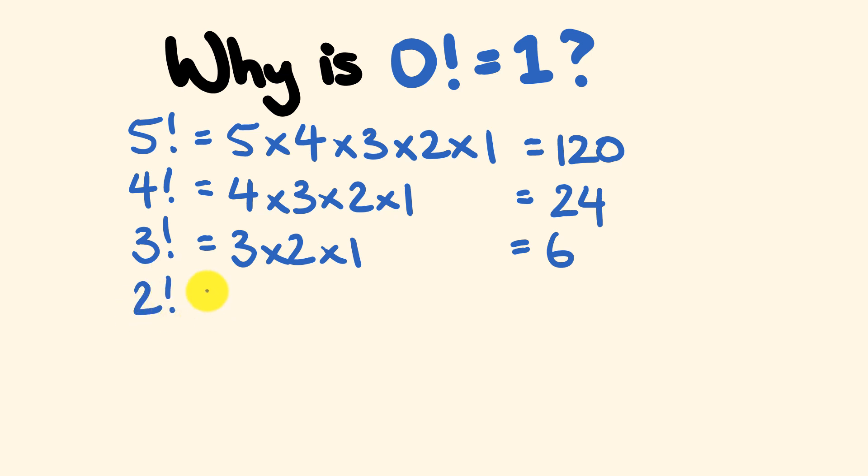Two factorial, you've probably got the hang of these already, equals two times one, which is equal to two. And we have one factorial, which is just one by itself there, and that is equal to one.